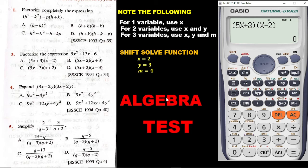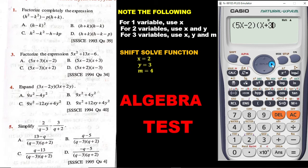Let's go to the second option. I'll edit what I have to save time — that's 5X minus 2. Go back, delete the plus and put minus, delete the 3 and put 2. Then move to the next bracket — you can see it is plus 3 — delete the minus and put plus, erase the 2 and put 3. Now I'm satisfied I've entered the right thing. Press solve, put 2 in place of X, press equals — we are getting 40. So the correct answer is B.